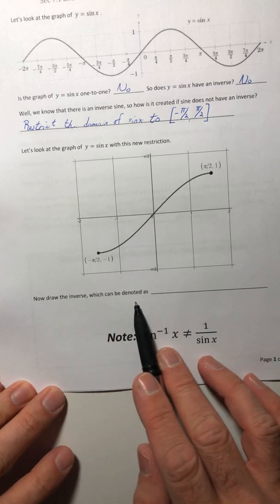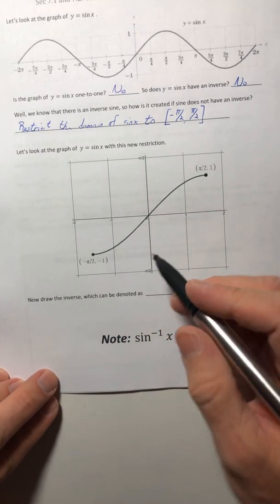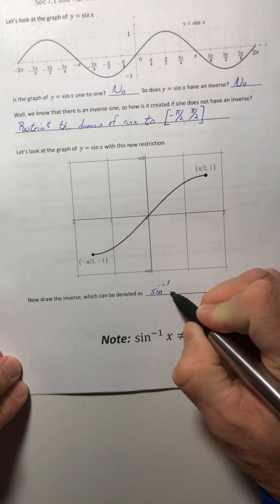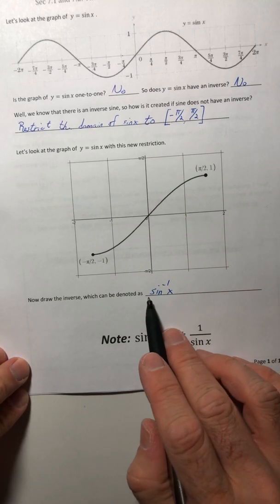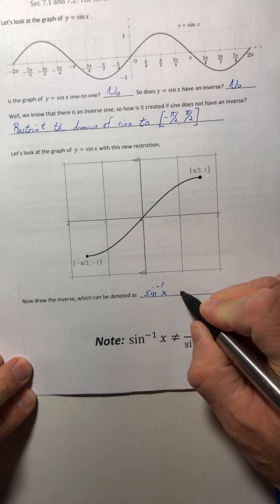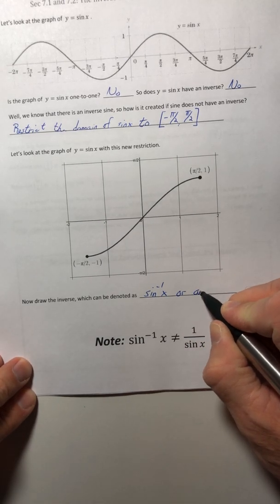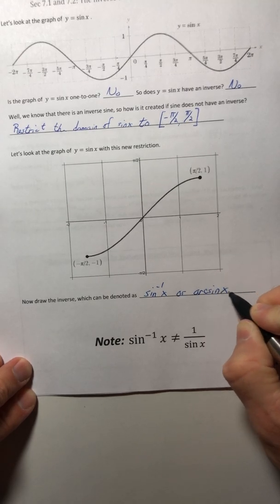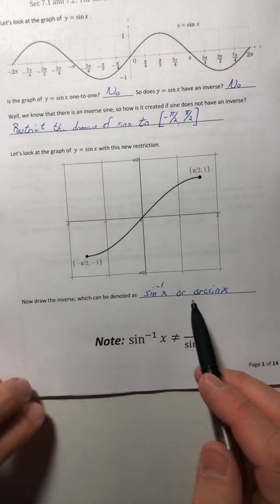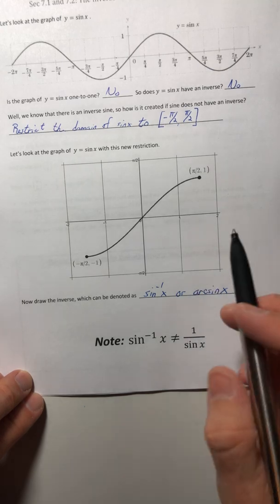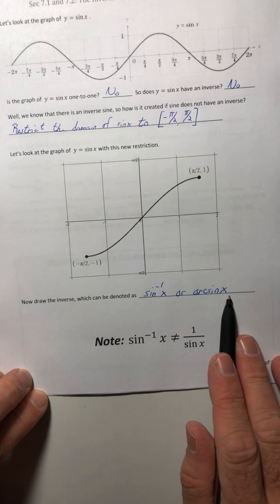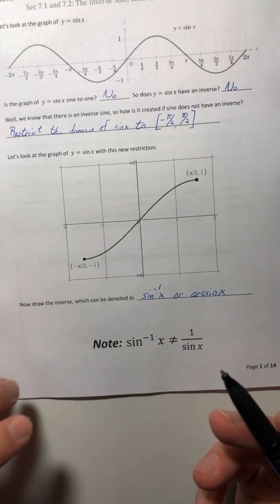Okay, so now draw the inverse, which can be denoted as, and then there's two ways to denote it. One of them is with that inverse function notation. So sine with that little negative one up in the exponent spot. Or another way to say it is arc sine of x. So you can use either notation in the book, and I, as well as any other instructor is going to flip flop between the two. There's no one way to write it. So just pick your favorite. Personally, I like this one better just sounds cooler. But that one is faster to write. So there you go.